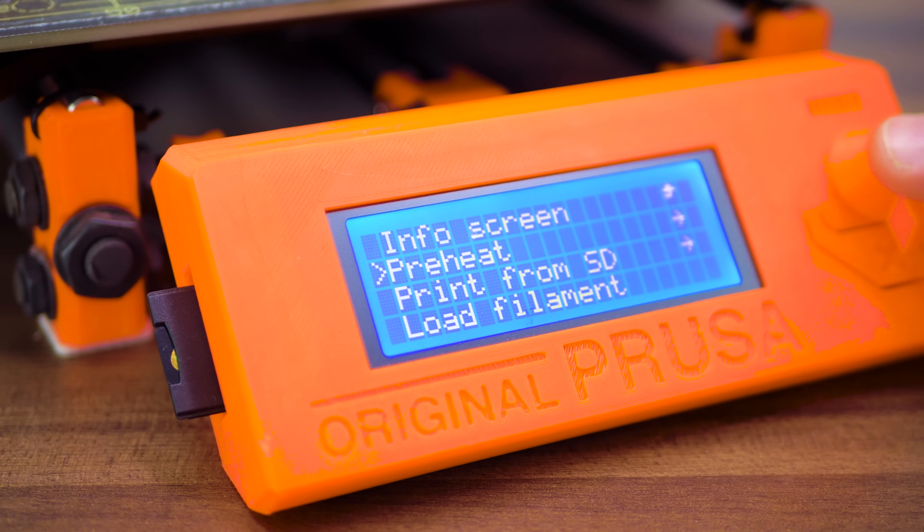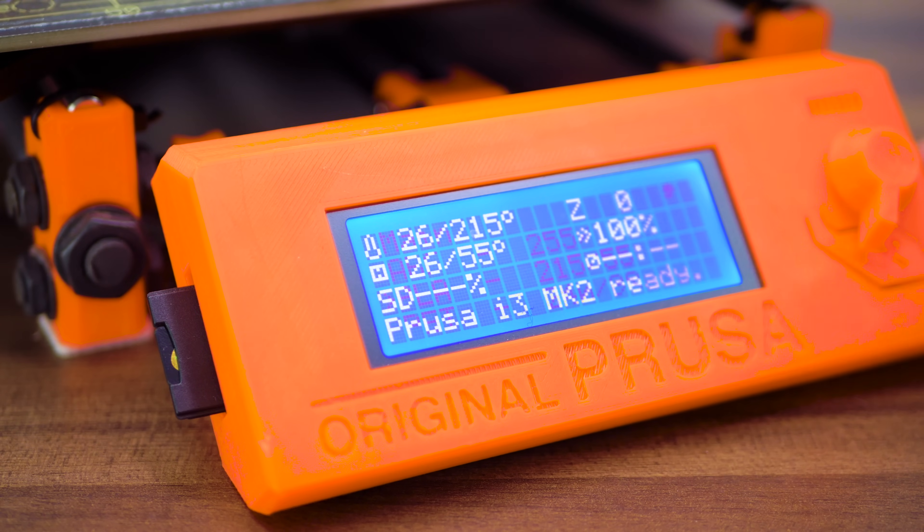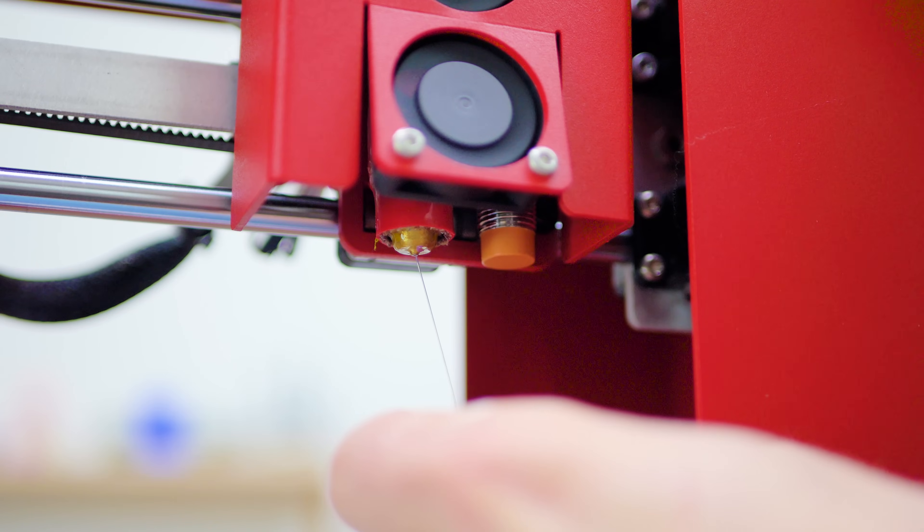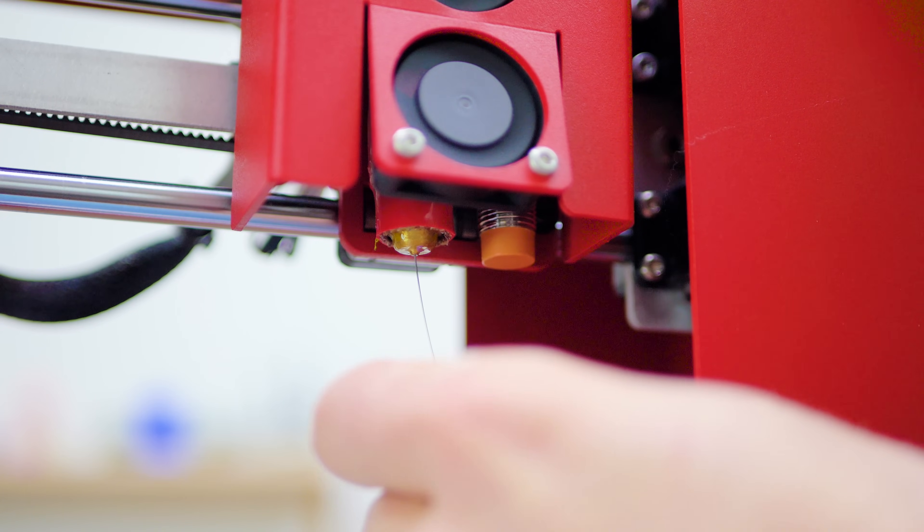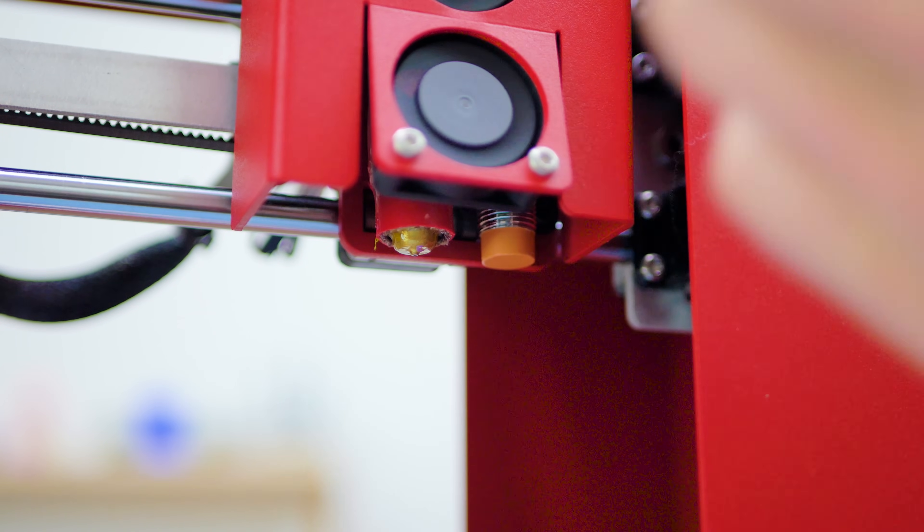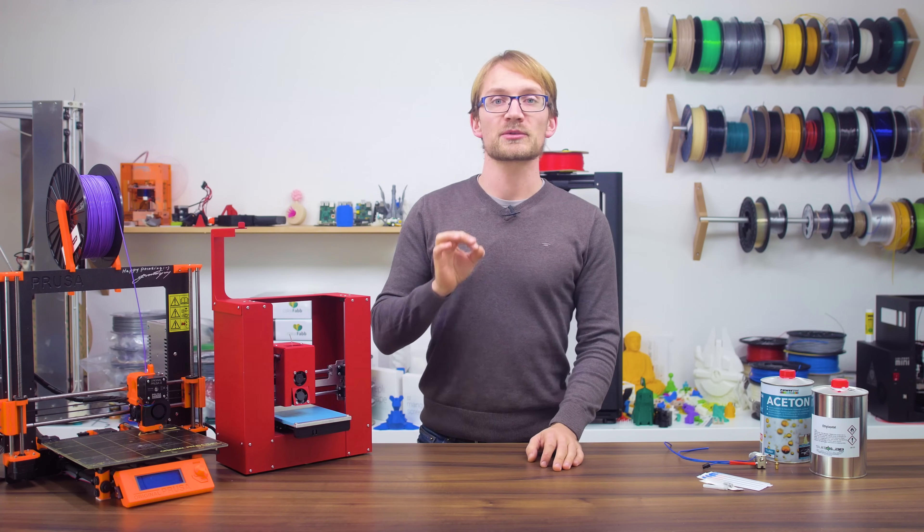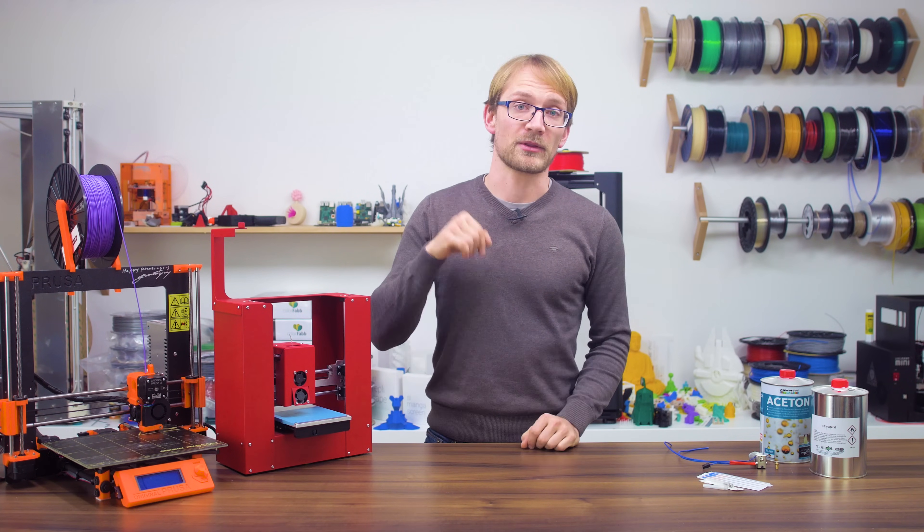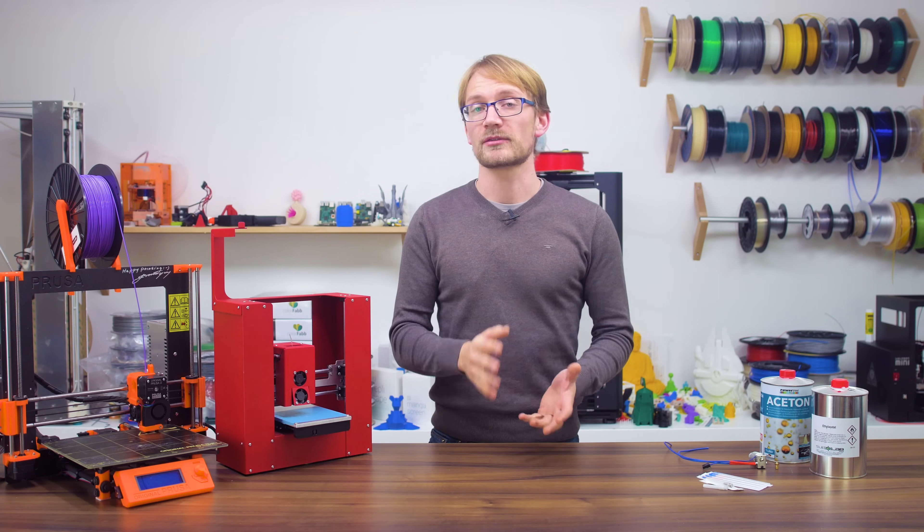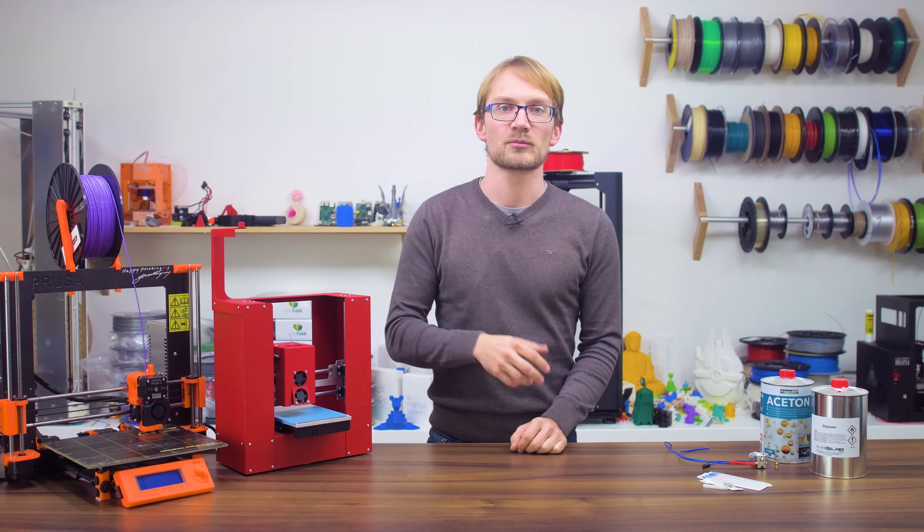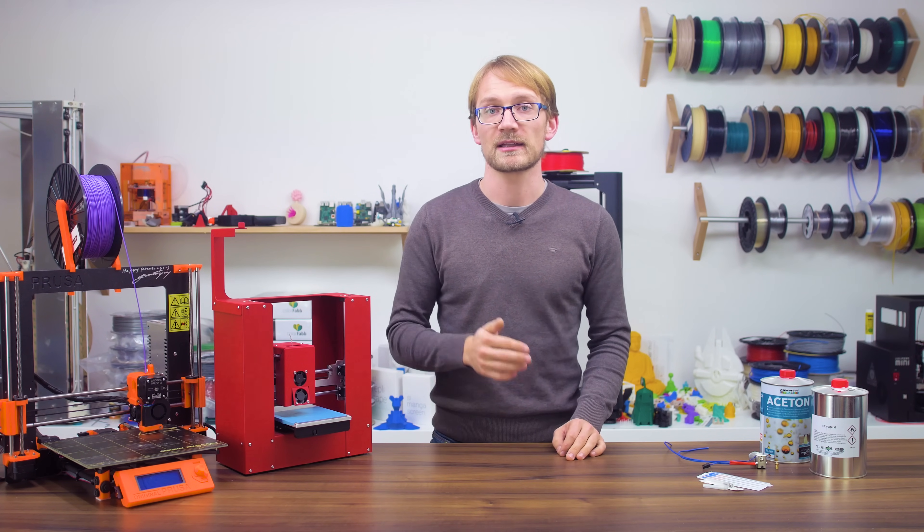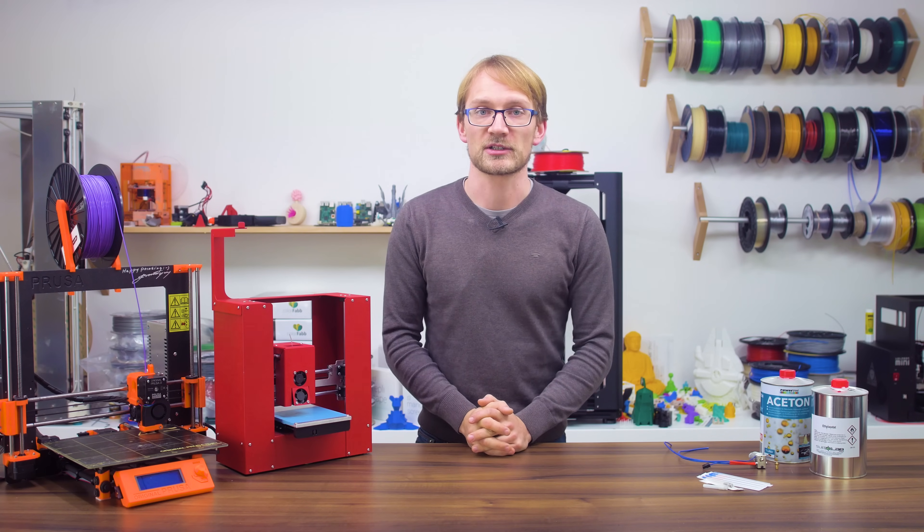So as a first try, preheat the nozzle to your regular printing temperature and get cracking with that needle. Still being careful not to burn yourself, your goal is not to extract the blockage but only to break it up enough so that it slips through the nozzle the next time you push filament through. You might have to go through the cycle a few times of fiddling with the needle and pushing through a bit of filament by hand to check if you've broken up the blockage enough.